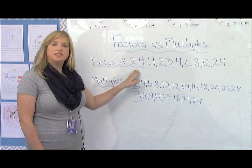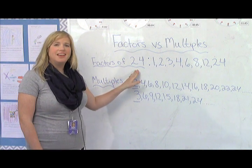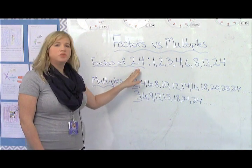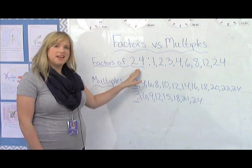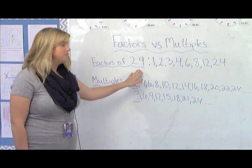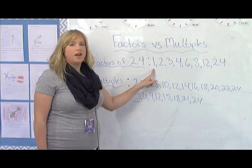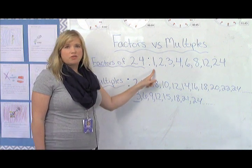Let's look at factors of the number 24. Factors are any number that can go into a number evenly without a remainder. So we're looking at all the numbers that can go into 24 evenly without a remainder. So if we look at that, we have 1. 1 can go into 24 without a remainder.